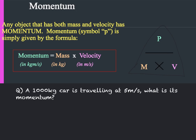From this we already know we are looking for the momentum. We have been given the mass in kilograms and the velocity in metres per second. Plugging these into our equation: momentum P equals mass 1000 kilograms times velocity 5 metres per second, giving us an answer of 5000 kilogram metres per second.